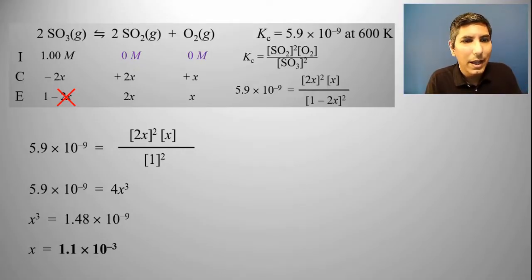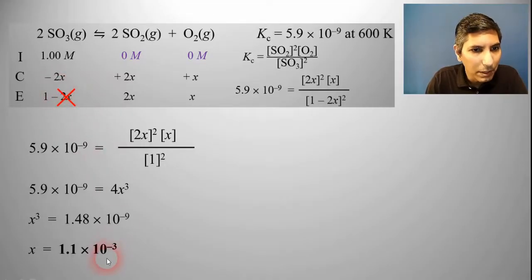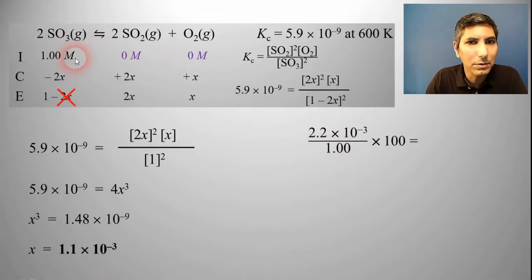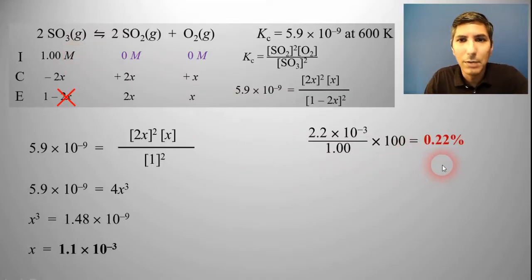Let's double check and make sure that this is actually appropriate to do. What I want to do is take whatever that term was that I was going to subtract, the minus 2X, and divide that by what it was going to be subtracted from to make sure that it's less than 5%, because this only works if that subtracted value that you're ignoring is less than about 5%. So 2X would be twice that number, and then divide it by 1.00, and times it by 100. This is much less than 5%. It's 0.22%, so it's okay to do that.